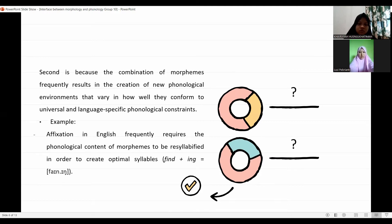For example, affixation in English frequently requires the phonological content of morphemes to be resyllabified in order to create optimal syllables. For example, find plus ing to be finding.